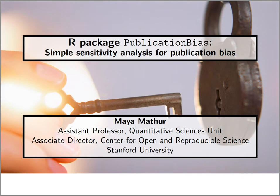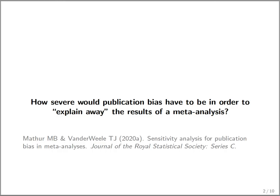I'm going to be talking about the R package publication bias, which conducts simple sensitivity analyses for publication bias in meta-analyses. The overall goal of this package is to answer questions of the form: how severe would publication bias have to be in order to explain away the results of a meta-analysis?